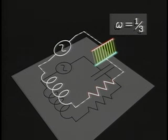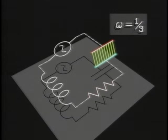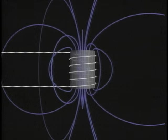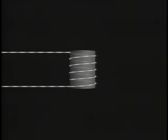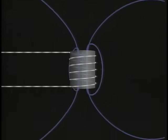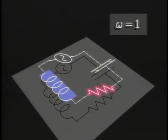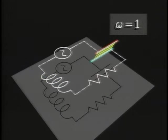A capacitor stores electrical energy in an electric field. An inductor stores energy in a magnetic field.